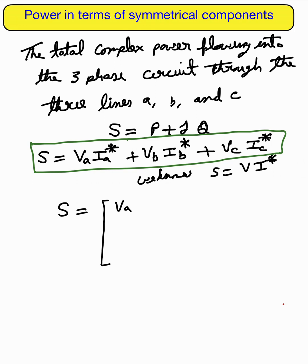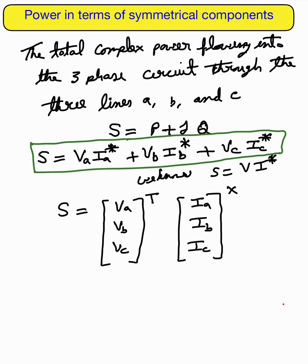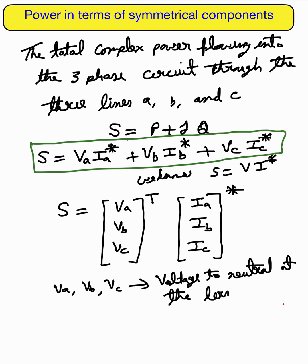Now we can write this in the form of a matrix: S equals [Va, Vb, Vc] transpose times [Ia, Ib, Ic] conjugate. Here Va, Vb, Vc are all the voltages to neutral at the terminals, and the currents Ia, Ib, and Ic are the currents flowing into the circuit of the three lines.